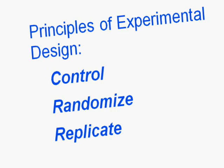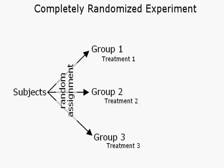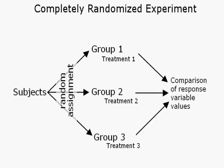A completely randomized experiment looks like this: we start with subjects, then randomly assign them to groups — in this case three groups, though there might be two or four. Each group gets a different treatment, carefully measured. Everything else about the groups should be kept as similar as possible. After the treatments, you compare the response variables. That is your completely randomized experiment.